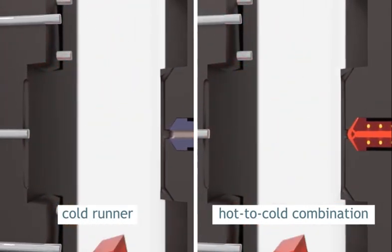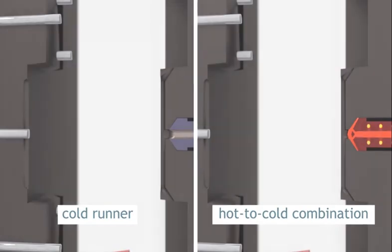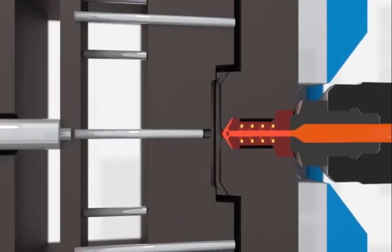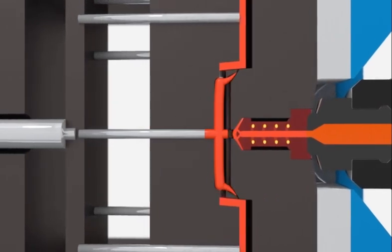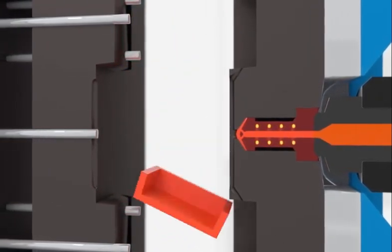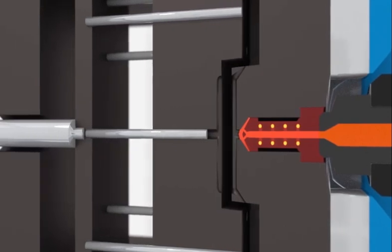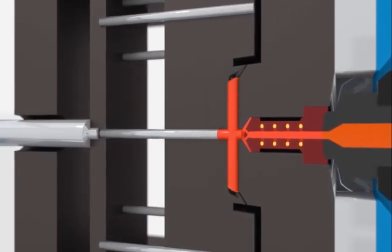A hot-to-cold design generally uses a hot center drop or a manifold system to eliminate the need for a cold sprue and cold runners, to save material, and to reduce the opening stroke of the mold. Sub or tunnel gates are automatically degated systems.